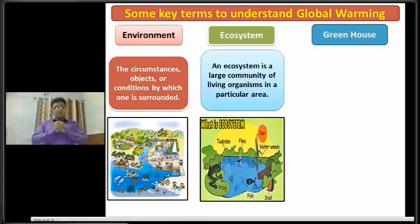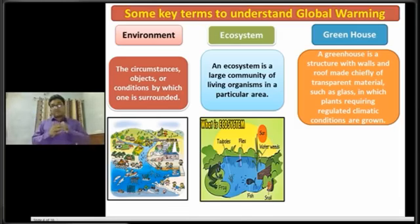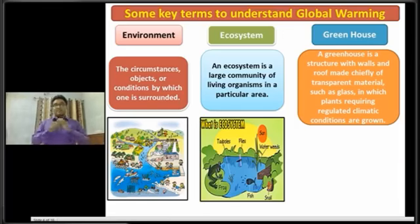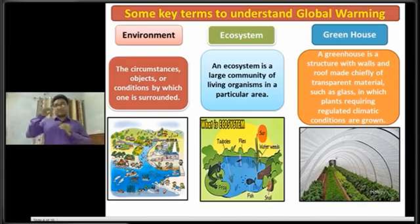Now I am going to show you the definition of greenhouse. A greenhouse is a structure with walls and roof made chiefly of transparent material such as glass, in which plants requiring regulated climate conditions are grown. That's all about the key terms useful to understand today's class.